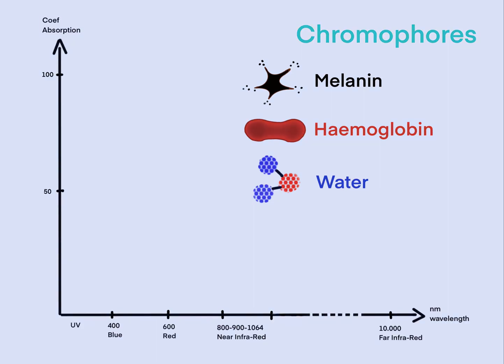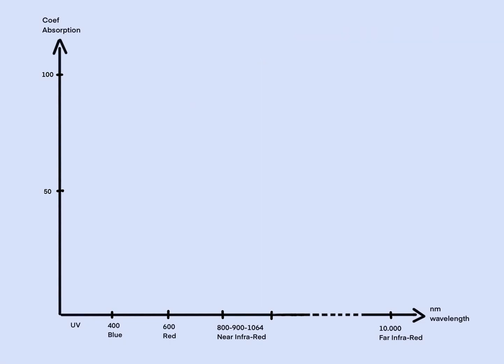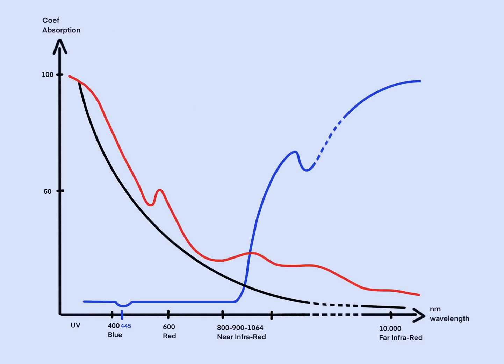Each chromophore has a coefficient of absorption that varies according to the wavelength of the laser. This means one type of wavelength targets one chromophore better than another, which in turn influences the intensity of cell vaporization and the clinical result.